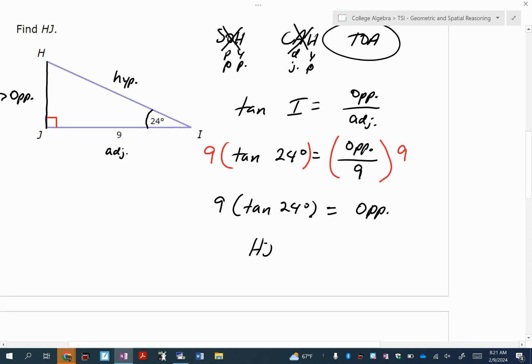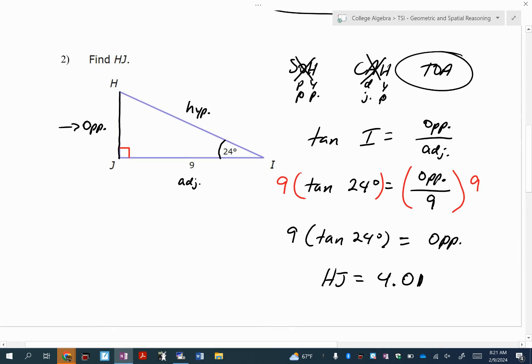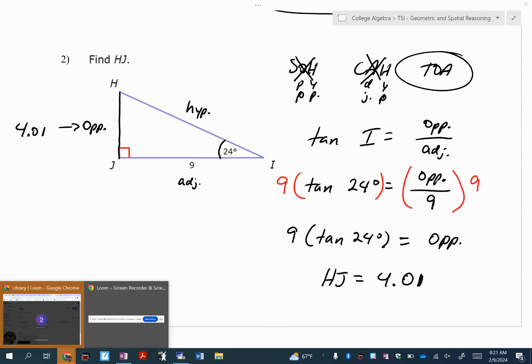So HJ is 4.0, I'm going to say 4.01, and it should tell you what to round to on the question.